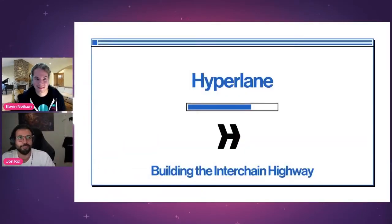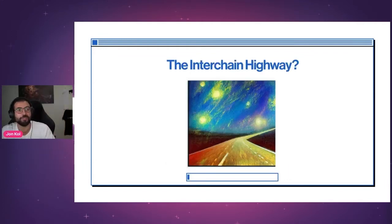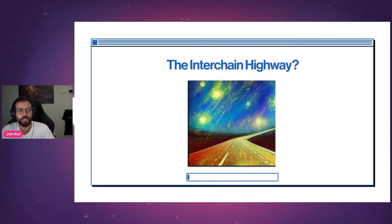So you look at the slide — building the interchain highway, what the hell does that mean? In this talk, I'm going to tell you about what we're working on at Hyperlane. Hyperlane is what we're trying to build — the modular interoperability platform. We're trying to build this thing we call the interchain highway: what we view as the way to navigate the interchain space.